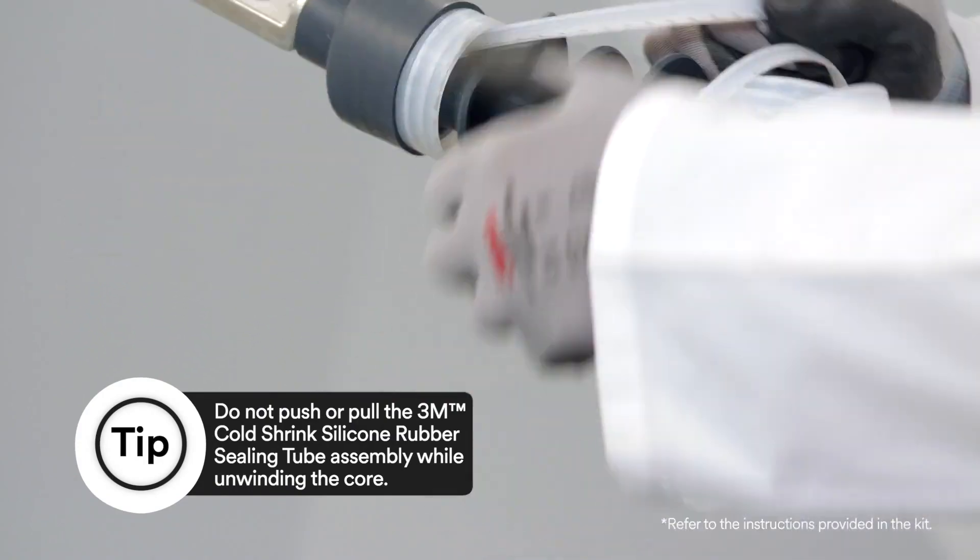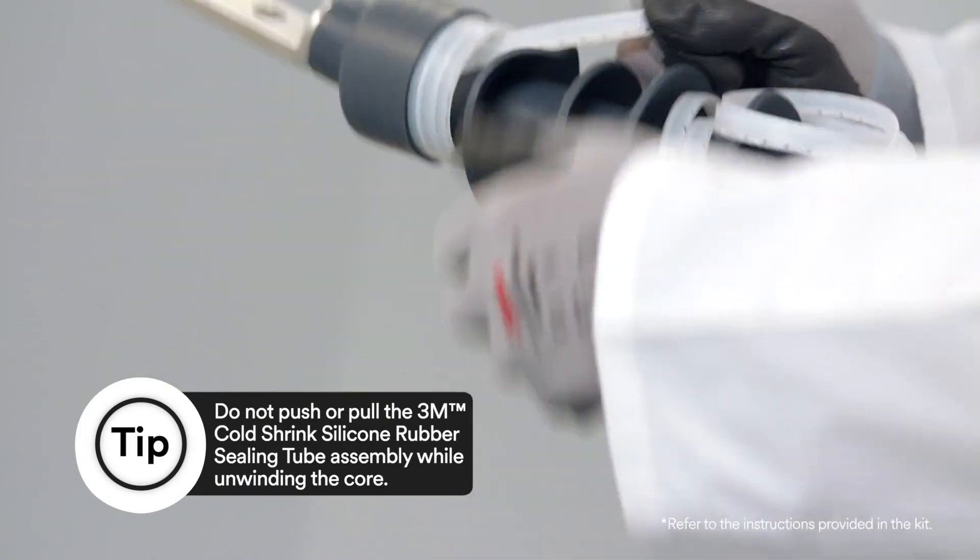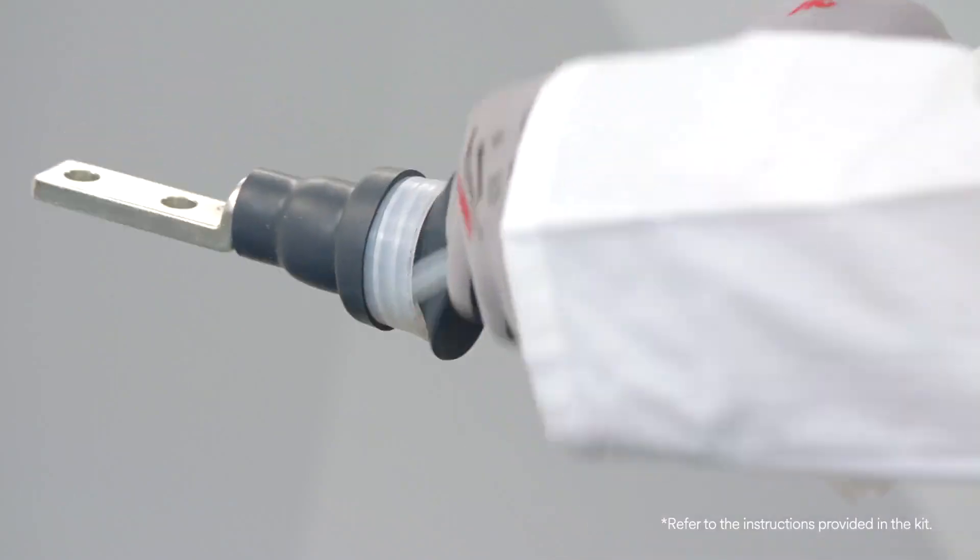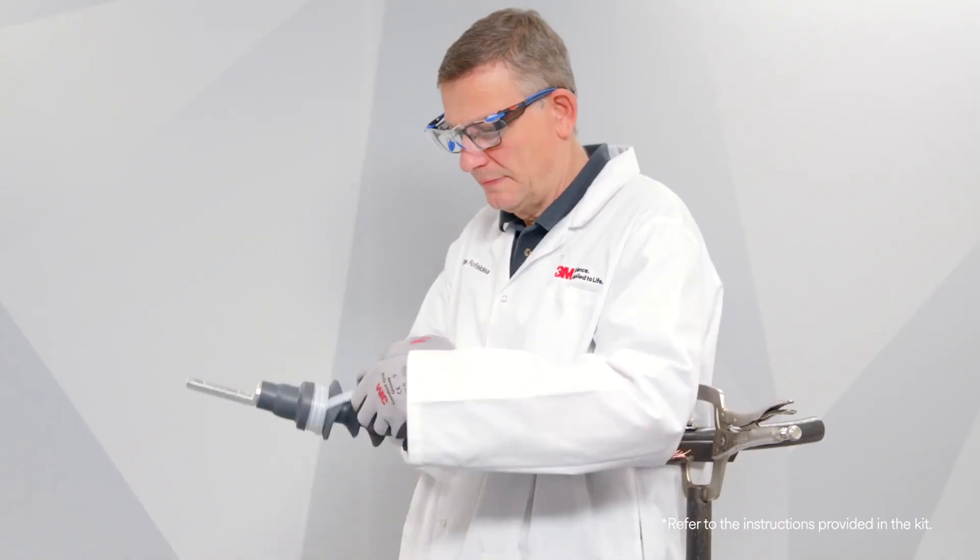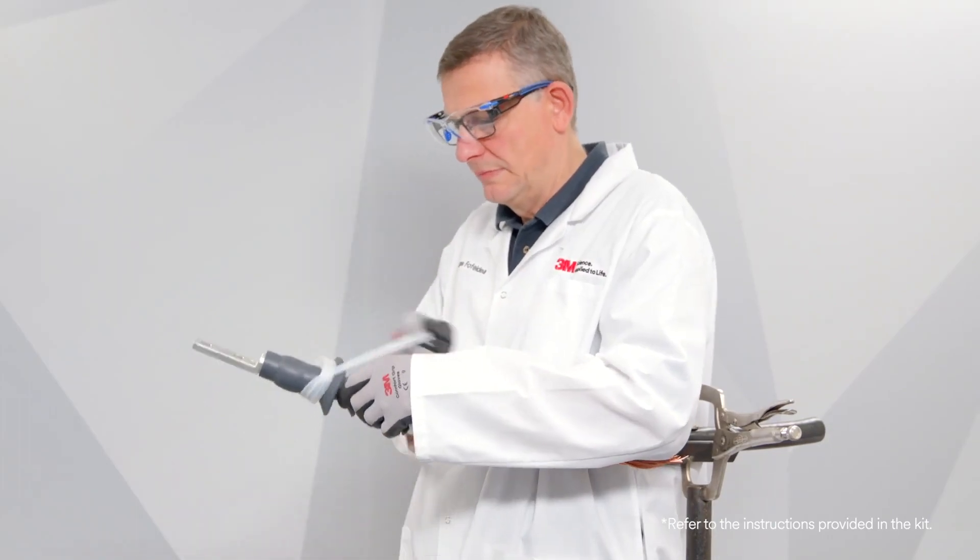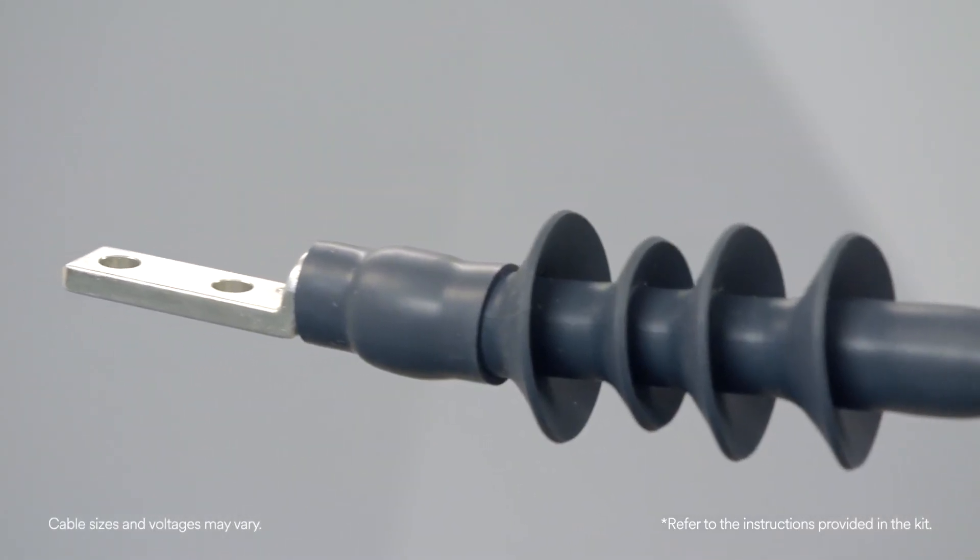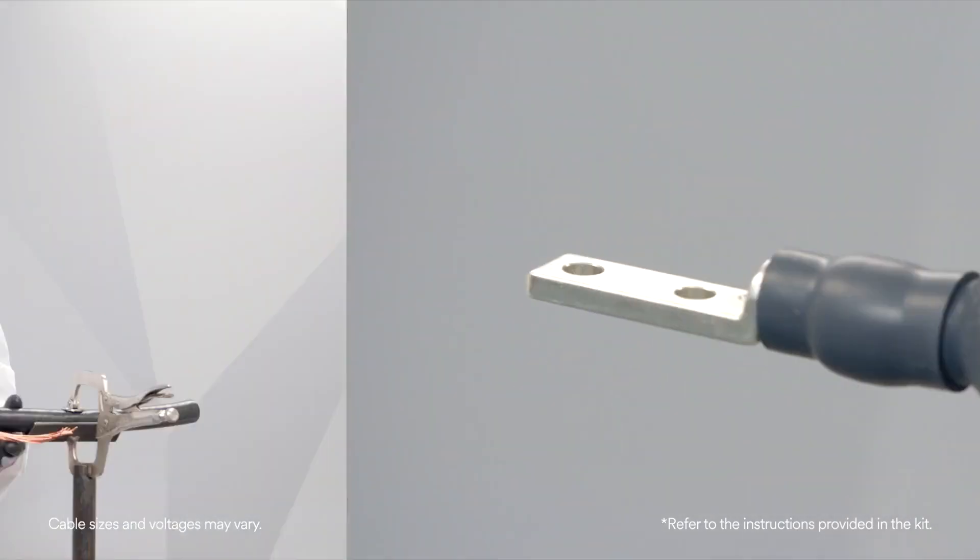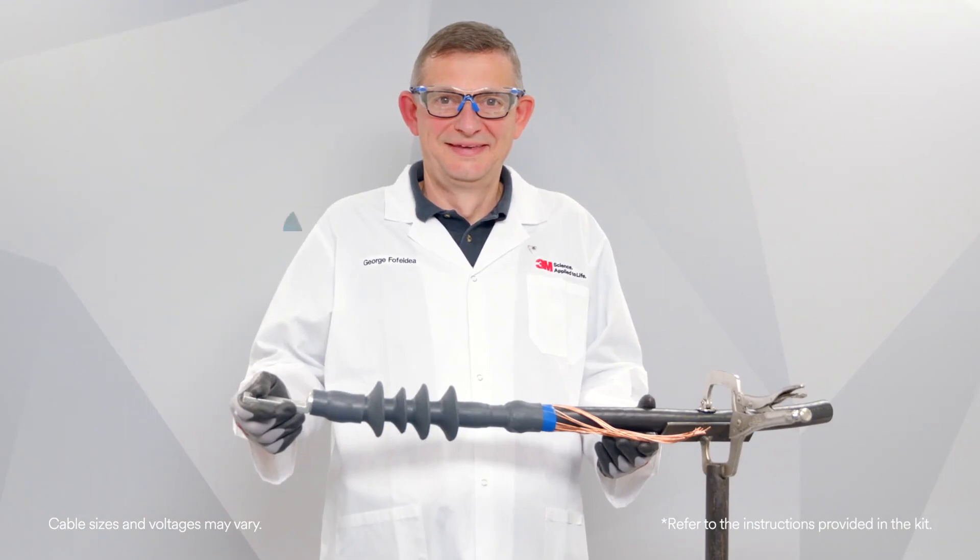Complete the removal of the core by pulling the core ribbon while unwinding counterclockwise. Be sure to alternate pulling and unwinding actions to help prevent the core material from binding up as the core is being removed. And that's how you install a 3M cold shrink QT3 silicone rubber skirted termination.